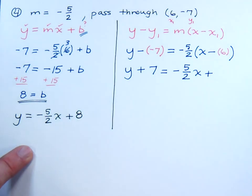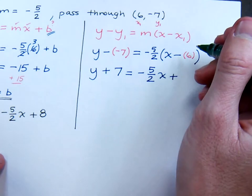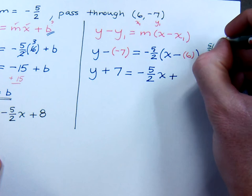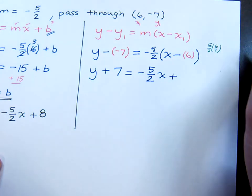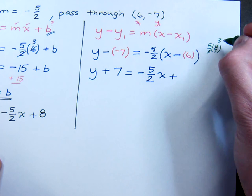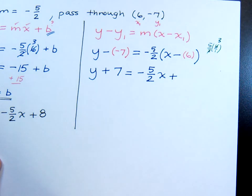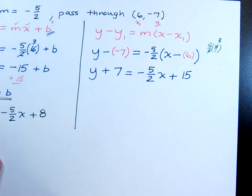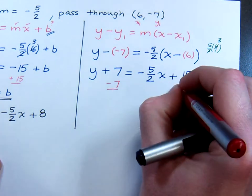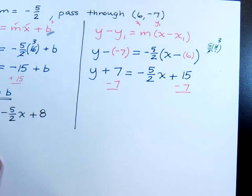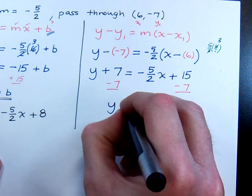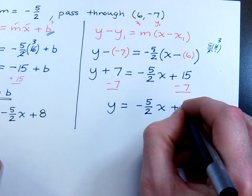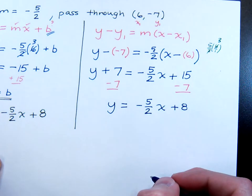And if you need to, out on the side, work with the fraction, that's fine. Okay, you know you've got to do 5 halves times 6 over 1, and then reduce this. The 2 goes into 6 3 times, so there's your 15. And to finish getting this solved for y, of course, just subtract 7 from both sides. And we're left with y equals negative 5 halves x plus 8, just like that.